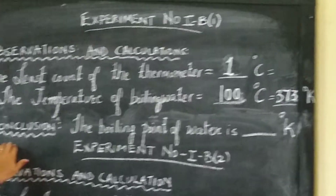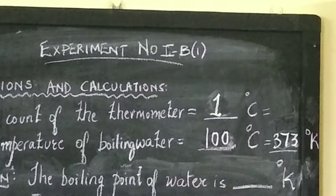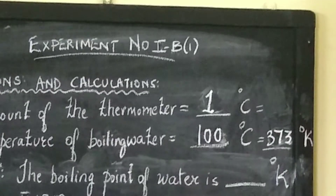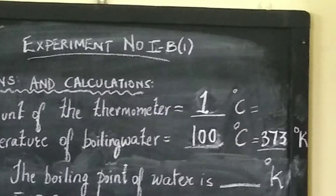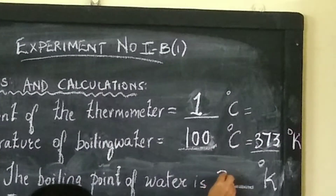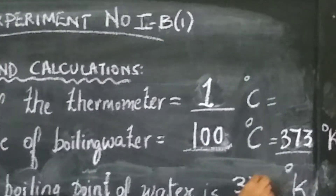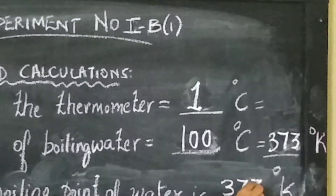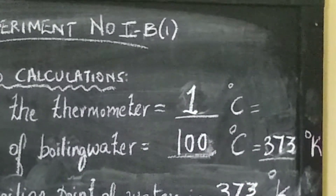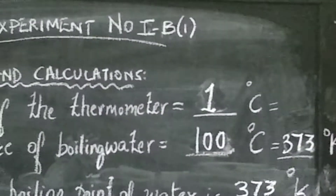Coming to the conclusion, the boiling point of water is 373 Kelvin.